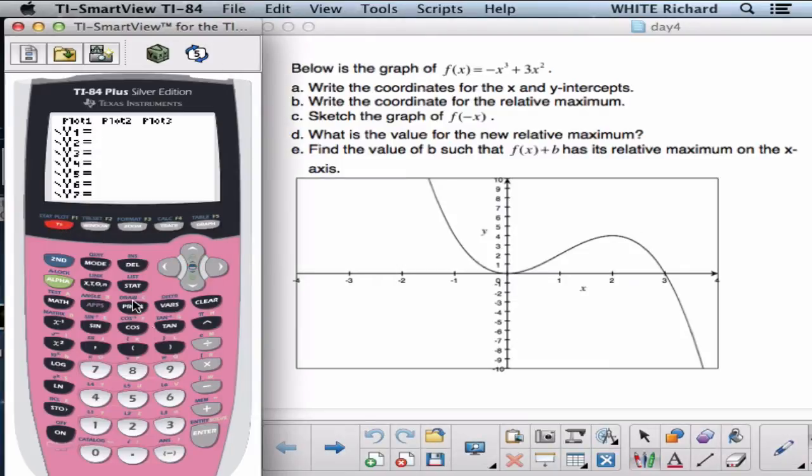Just click your y equals button. Negative x cubed plus 3x squared. Okay, I don't know what my window says so let's just click graph and see what we get. Not a bad window, also not a good window.